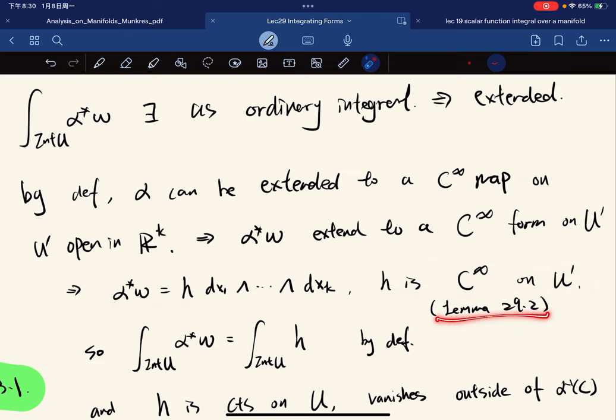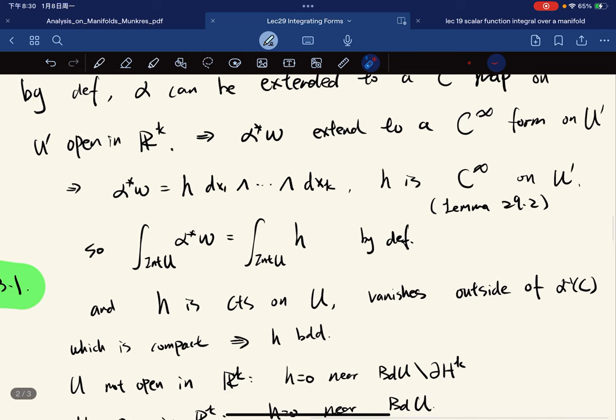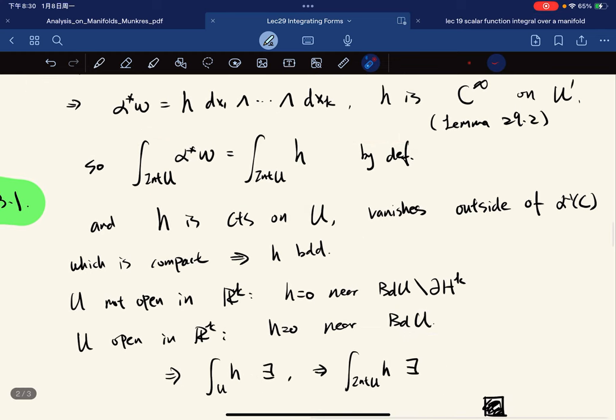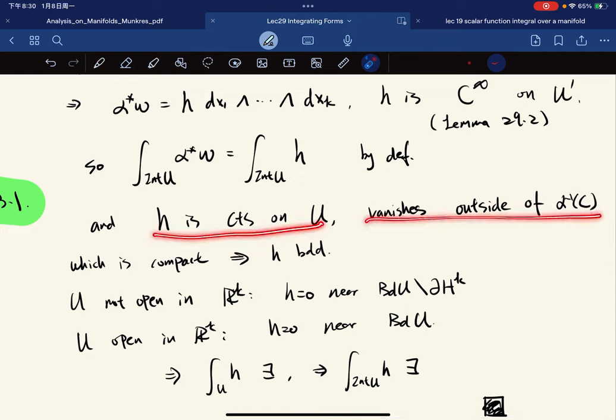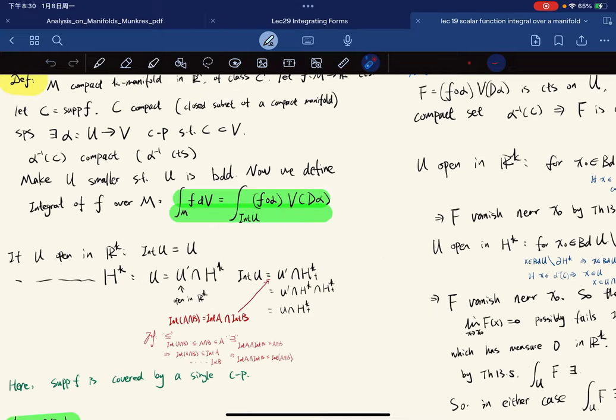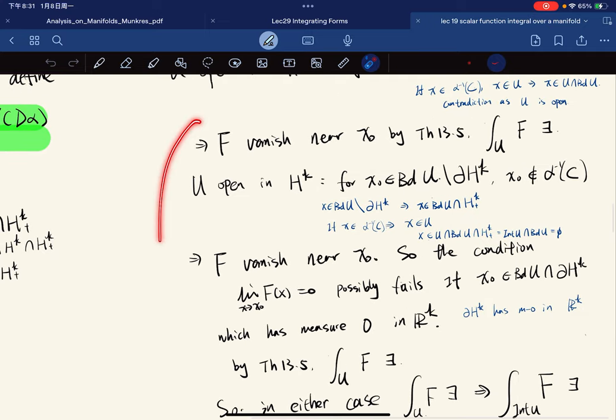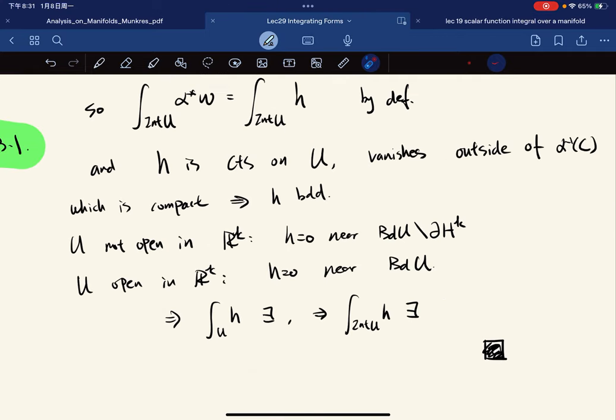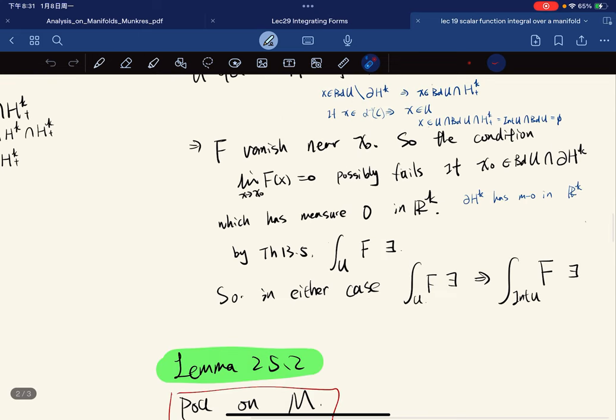We know that h is continuous and vanishes outside this set, and this set is compact because α inverse is also smooth and continuous. So h is bounded—it's a continuous bounded function, so we can apply all the previous theorems we have proven. If U is not open then we know this. This is basically like copying those arguments, the exact same arguments.